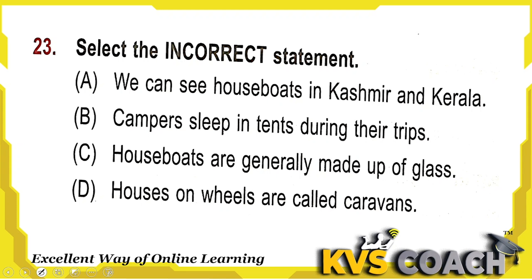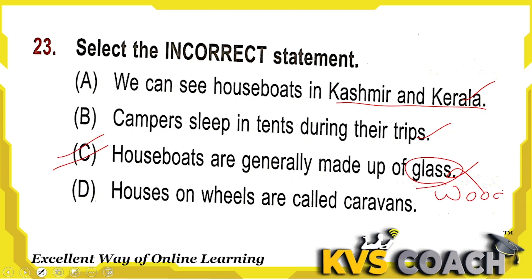Next: select the incorrect statement. A — houseboats are seen in Kashmir and Kerala, which has many lakes — this is correct. B — campers sleep in tents during trips — this is also correct. C — houseboats are generally made up of glass — this is incorrect because houseboats are made of wood, not glass. D — houses on wheels are called caravans — this is correct. So the incorrect statement is option C.